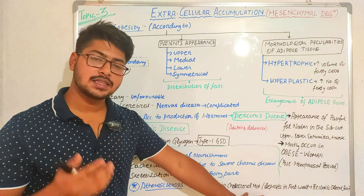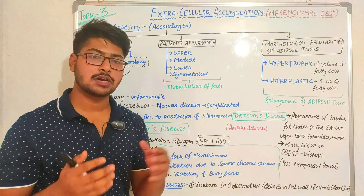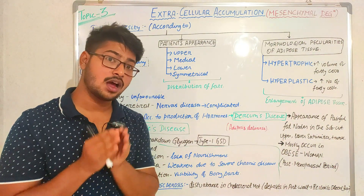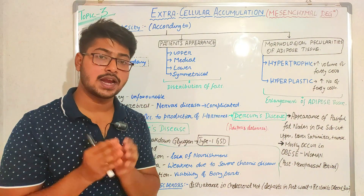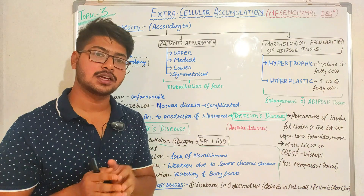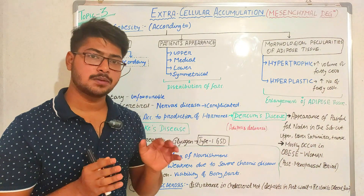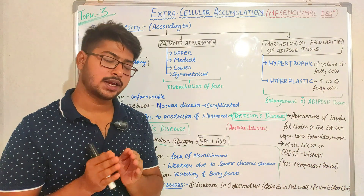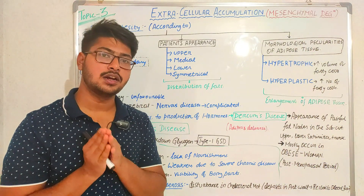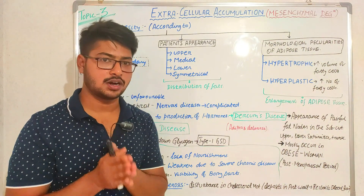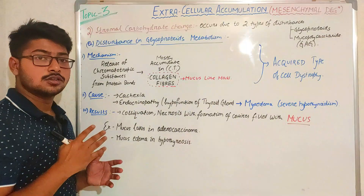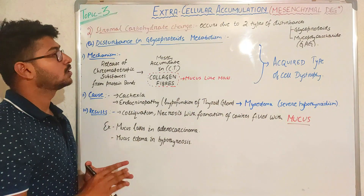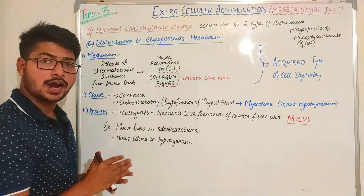The next condition is arteriosclerosis — a disturbance in cholesterol or cholesterol ester deposits or metabolism. In this condition, there will be deposition of cholesterol in the arterial walls, affecting blood supply throughout the body. It comes under defects of the heart.